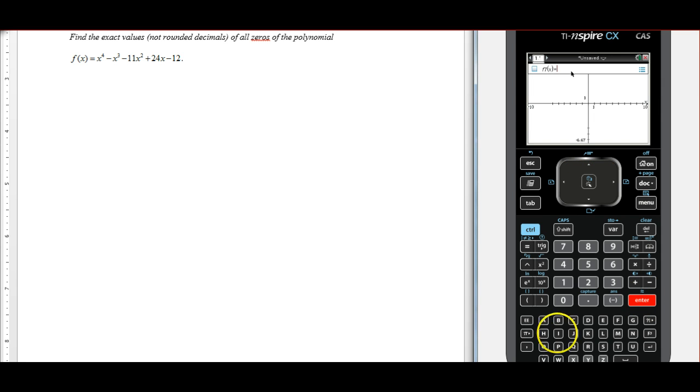And I'm going to type in my graph. So we're going to get x to the 4th minus x cubed minus 11x squared plus 24x minus 12.